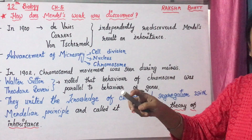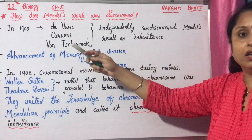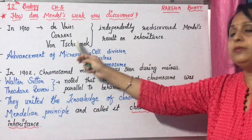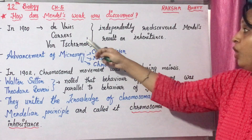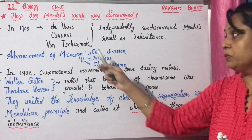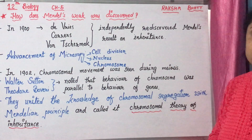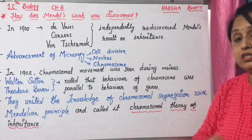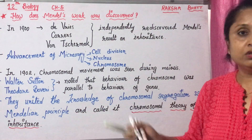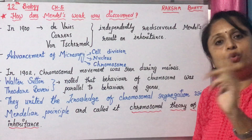All three scientists performed the same experiments independently and got similar results to Mendel — surprising! All got the same ratios. When Mendel was alive, he didn't get any credit.